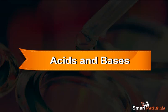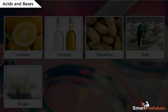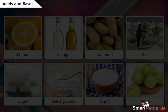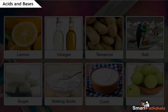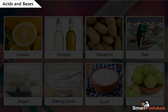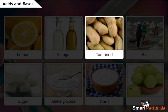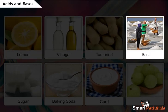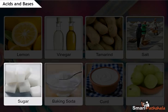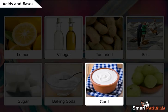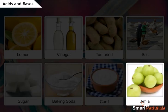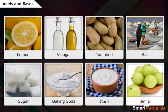Acids and Bases. In this chapter, we will learn about acids, bases and salts. We come across many substances such as lemon, vinegar, tamarind, salt, sugar, baking soda, curd, and amla in our daily life.